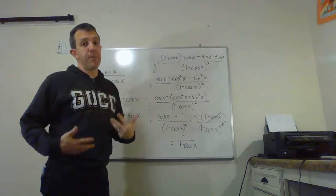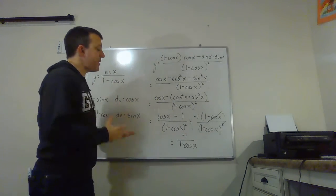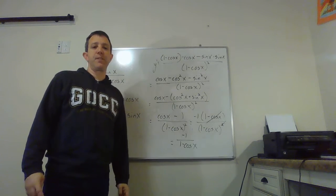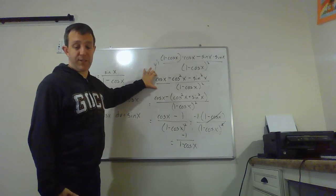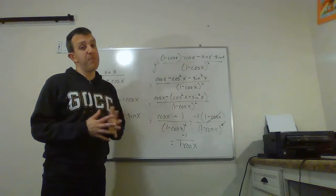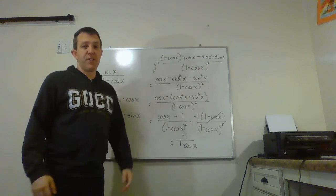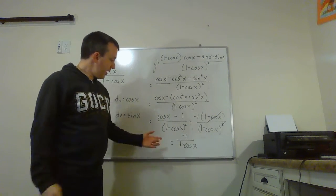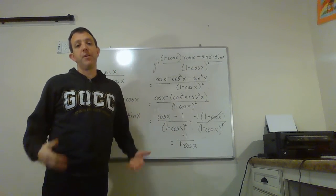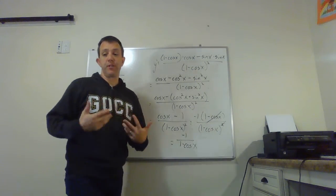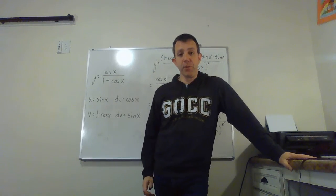That leaves a derivative of negative 1 over (1 minus cos x), which looks a lot nicer than the mess we started with. If you can clean these up, you want to — one big reason is that if you needed a second derivative, you do not want to apply another quotient rule to the complicated form. The simplified form is still a quotient rule, but a much simpler one. That's section 3.5 — have a wonderful day!